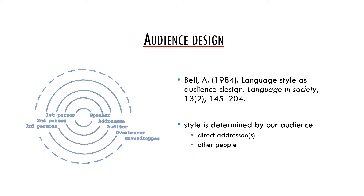Based on Bell's analysis, our style is also influenced by two other possible participants. These are the auditors, who are part of the interaction but are not directly addressed, and the so-called overhearers, who are merely passive — they are not part of the interaction but the speakers are aware of their presence. Bell also mentions the eavesdroppers who listen to the speaker but the speaker does not know about them, so from a logical point of view they don't influence the way how the speaker speaks.